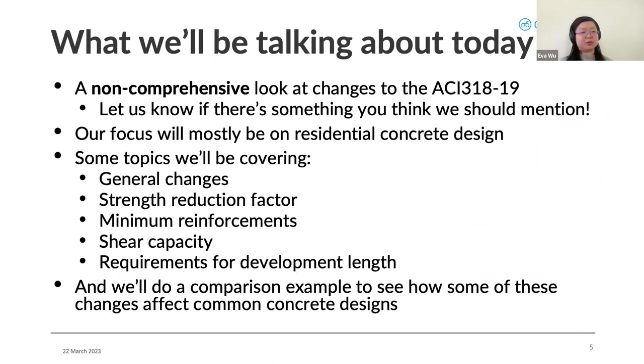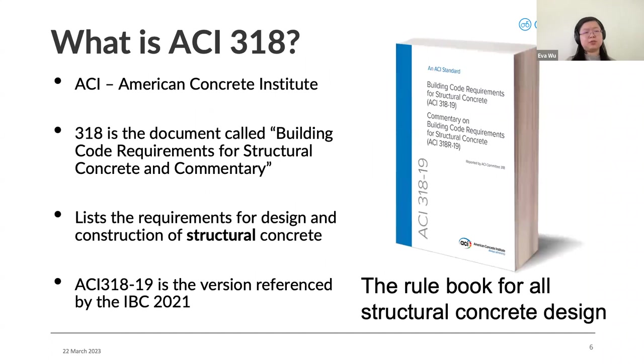Here's the list of things we'll talk about today. We'll go over a non-comprehensive look. The changes are quite extensive, so we'll cover the ones that we think will be relevant to concrete design. The changes between ACI 318, between 14 and 19 versions. Some general topics will be covering general changes. More specifically, we'll talk about changes to the strength reduction factor, changes to minimum reinforcement requirements in slabs, how the shear capacity has changed in the new version, and requirements for development length. Then we'll do an example comparison to see how these changes affect common concrete designs.